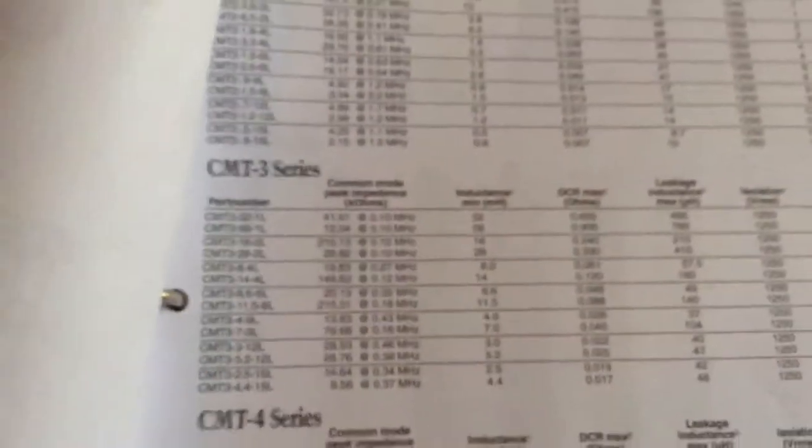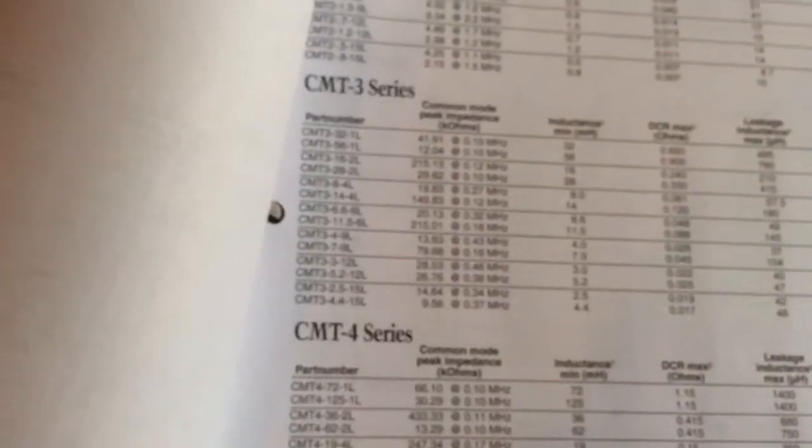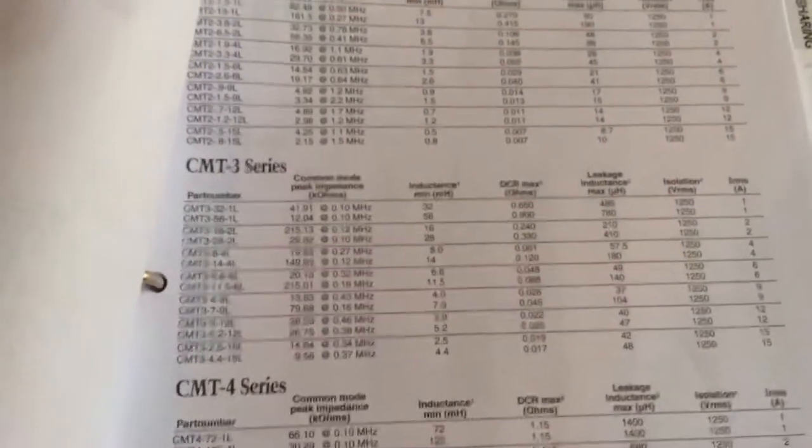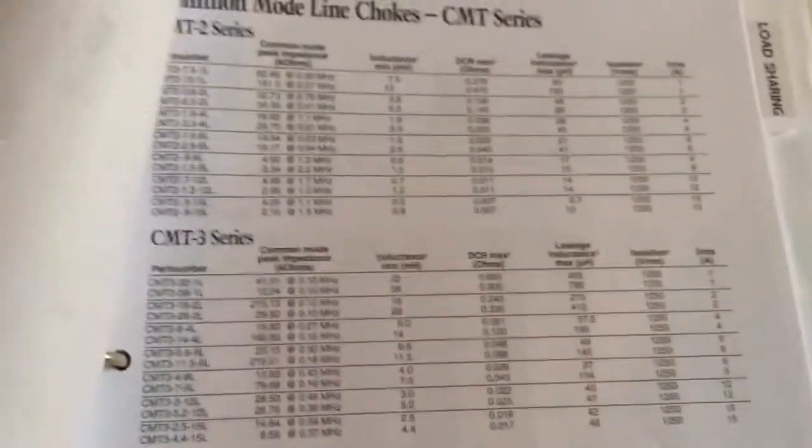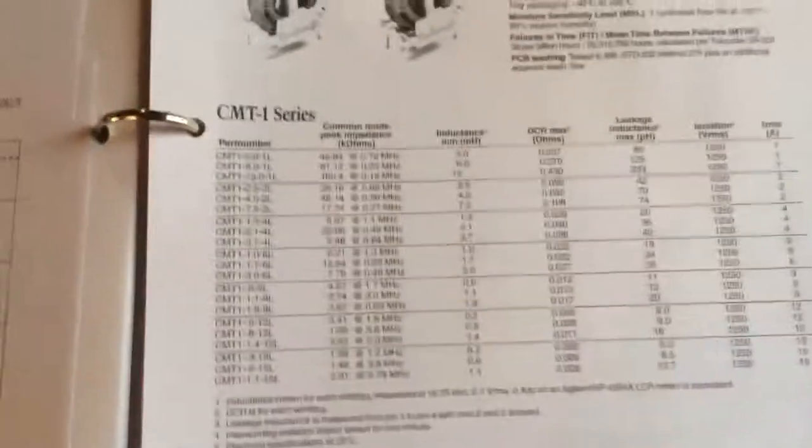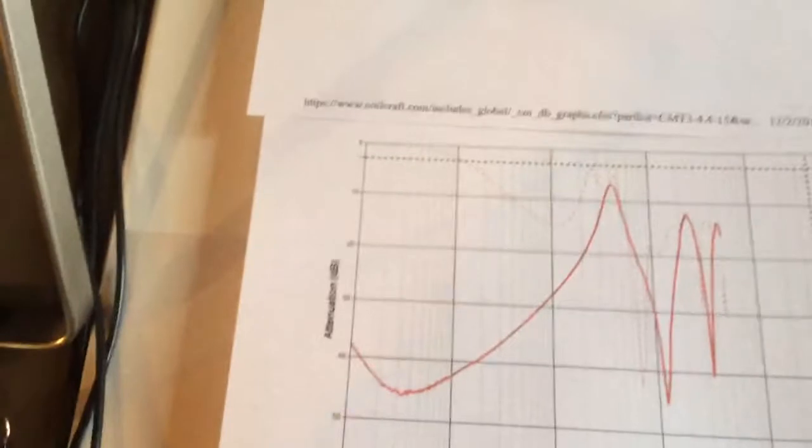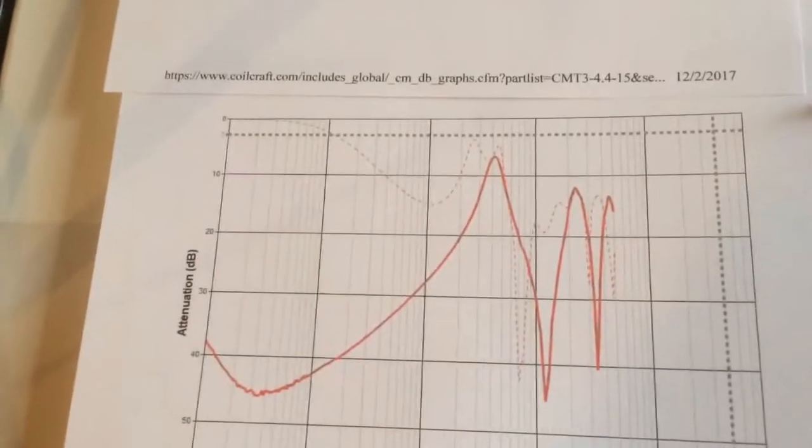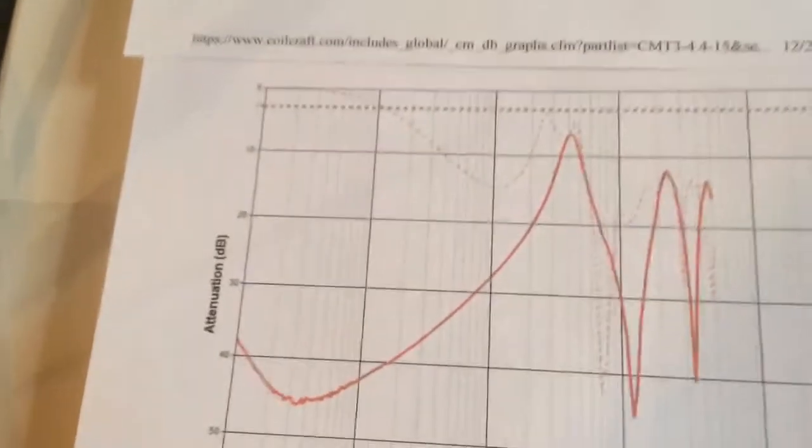That's the one listed on the bottom there and that has a 15 amp rating. So how do you select these? Well, you need to select one that has high attenuation and high impedance at the switching frequency. The website's designed really well; they actually provide the curves for these so you can go and look at the curves and see how much attenuation you have.